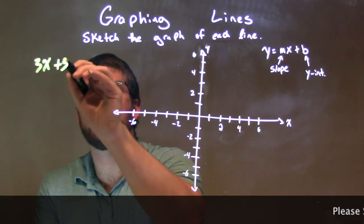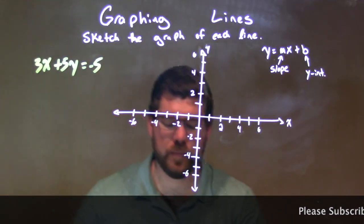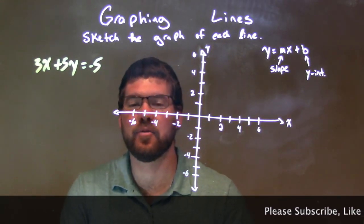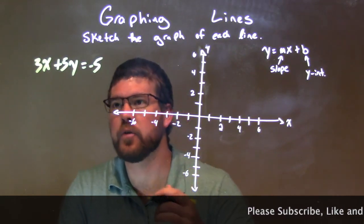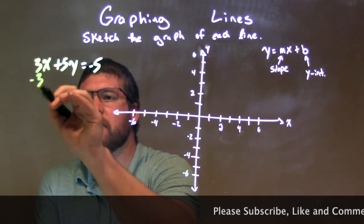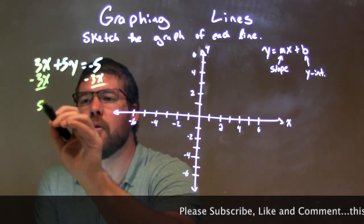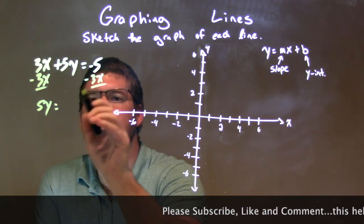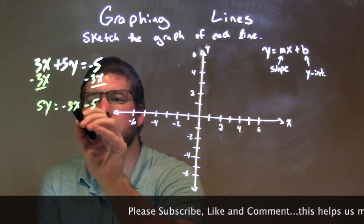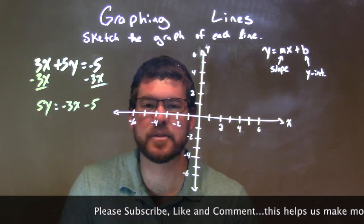3x plus 5y equals negative 5. What I like to do is get this into slope-intercept form from standard form. That means getting y by itself. So I'm going to subtract 3x from both sides. That leaves me with 5y by itself on the left equals negative 3x minus 5.